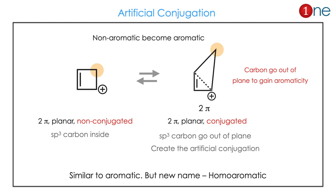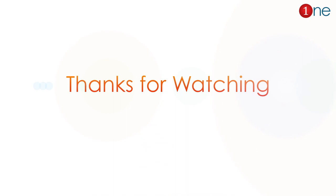What really happens is that one carbon — the highlighted one — goes out of plane to create the aromaticity. So conjugation is created there, the system becomes aromatic, and it gains stability. Since it is similar to aromatic, it is called homo aromatic. That's all from this video, I hope it was useful.